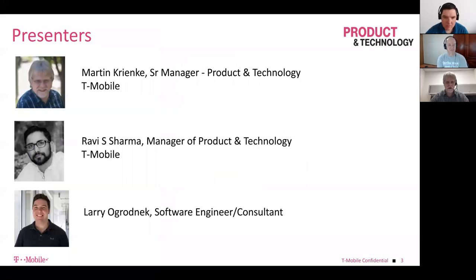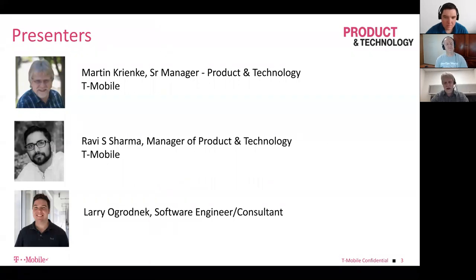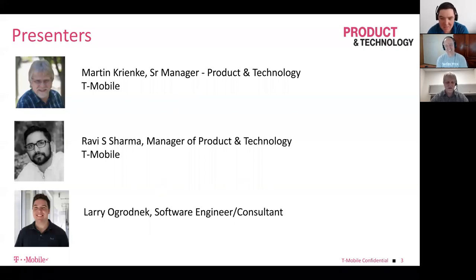I'm Martin Krinke, Senior Manager of Product and Technology at T-Mobile. Ravi Sharma is now Manager of Product and Technology in one of our other pipeline teams, but he was essentially our product manager for customer support. We found it so important that we had two product managers — one for pipeline activities and one focused purely on the customer. Larry was our go-to for anything technical; he did a lot of the core work under the covers.